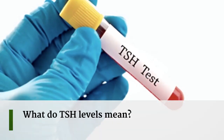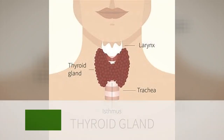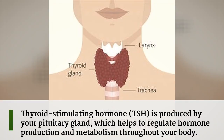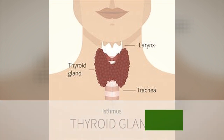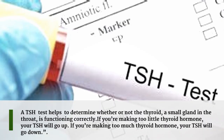Thyroid stimulating hormone, or TSH, is produced by your pituitary gland, which helps to regulate hormone production and metabolism throughout your body. A TSH test helps to determine whether or not the thyroid, a small gland in the throat, is functioning correctly.